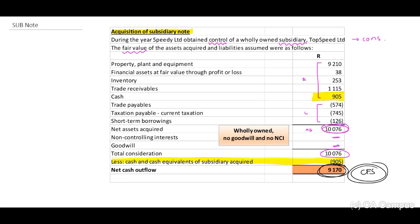Now if this were a disposal, you would do exactly the same — you would also include assets, liabilities, consideration, and profit. You include exactly the same information.